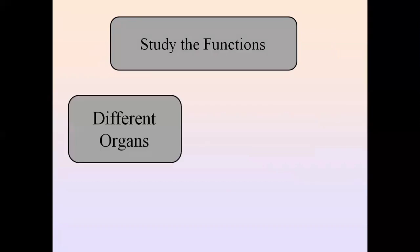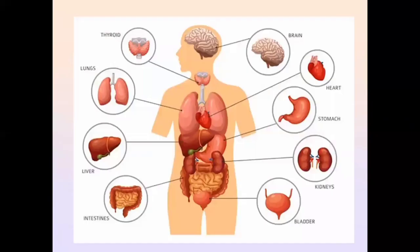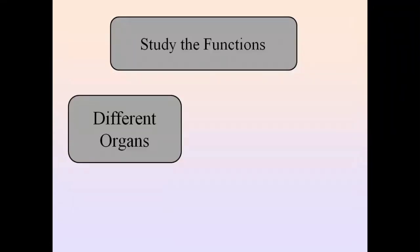We study about the functions that make up the living body. The human body has different organs that are responsible for its formation, including the brain, heart, stomach, kidney, bladder, intestine, liver, lungs, and thyroid. These organs collectively make up the human body. In physiology, we study the normal working and normal functioning of each organ and how these individual organs perform their functions responsible for healthy living of the human being.